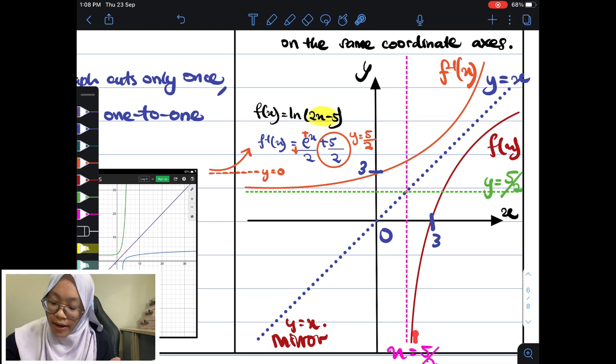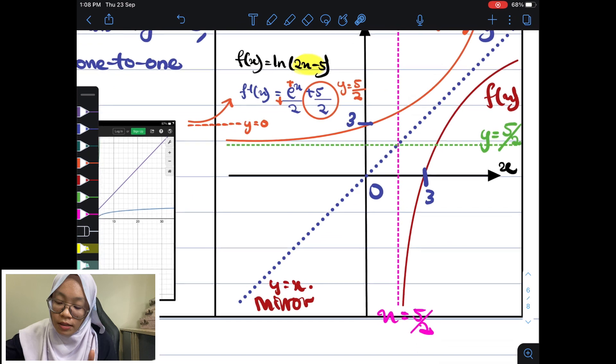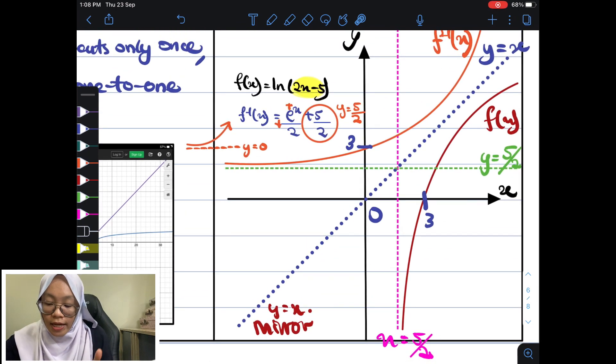One is going to the first quadrant without cross. Another one is going to the first quadrant as well. But not crossing with each other. So, just make sure your graph takkan cross. Macam mana you nak check adalah you do try and error.